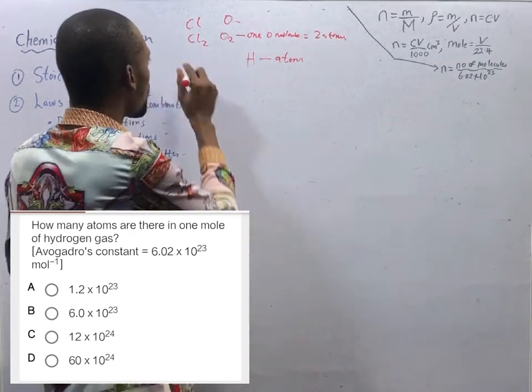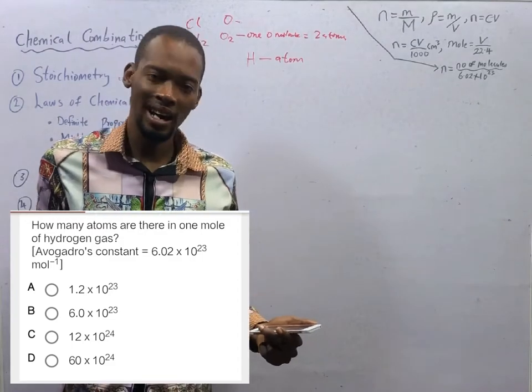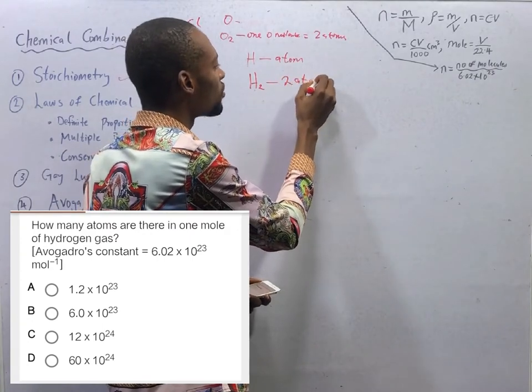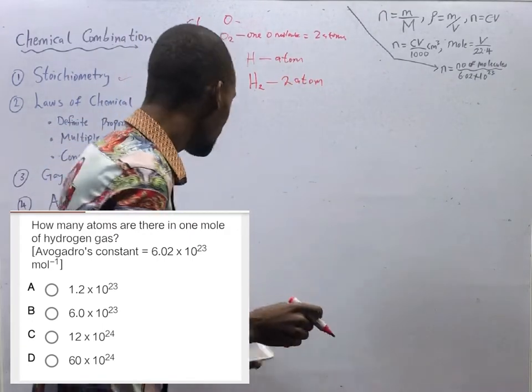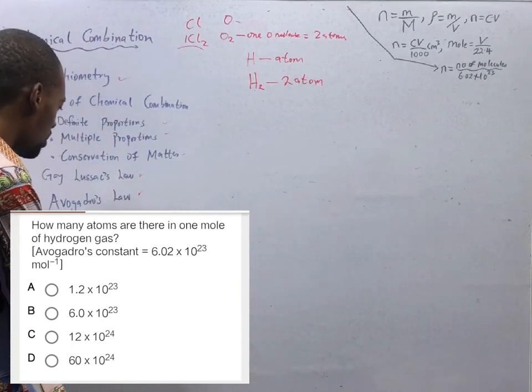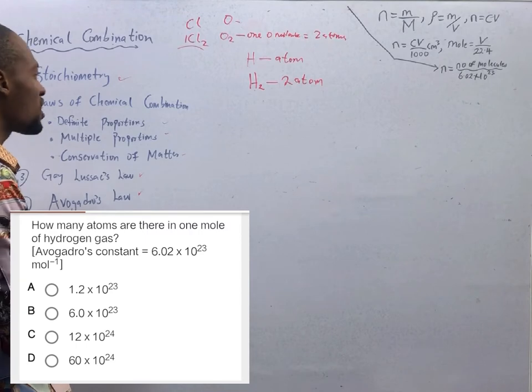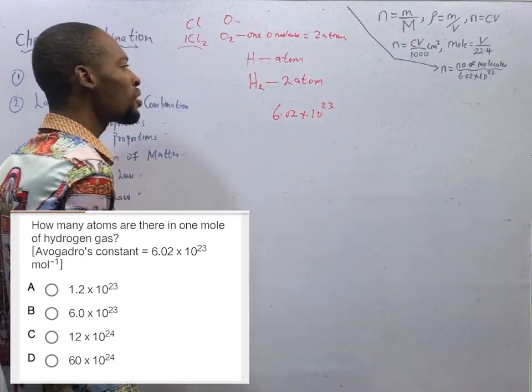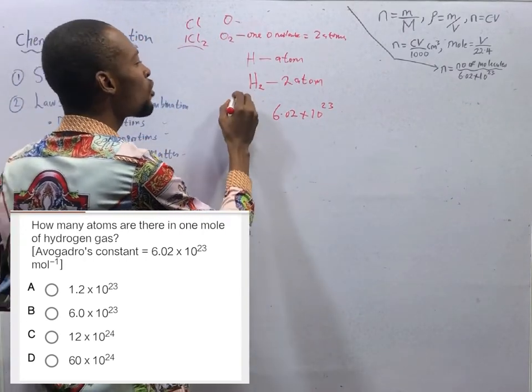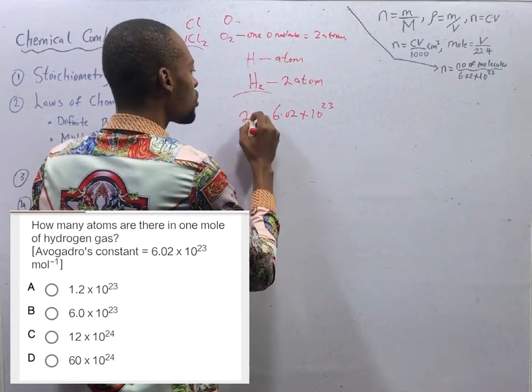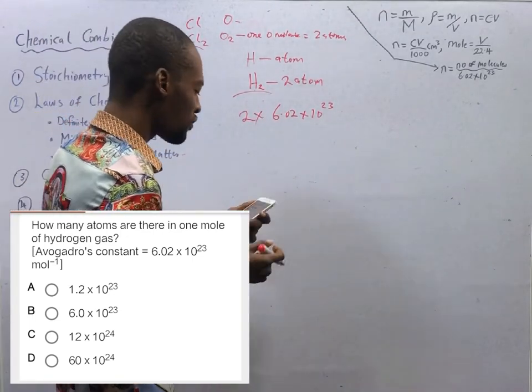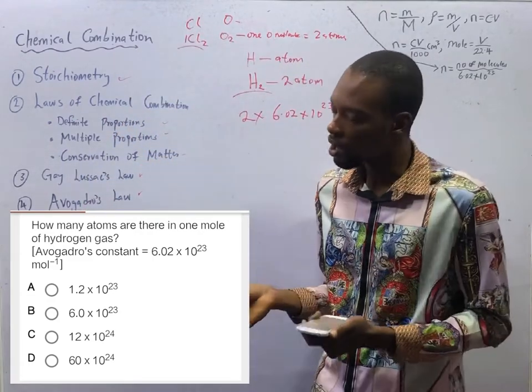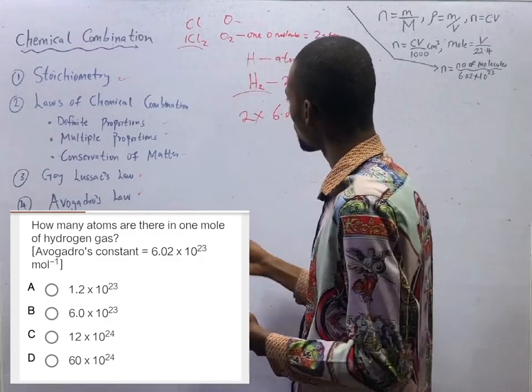Therefore, hydrogen gas or hydrogen molecule contains two atoms. And one atom contains Avogadro's number, which is 6.02 times 10 to the power of 23. Two atoms of hydrogen gas is simply equal to two atoms of hydrogen. This would be 2 times 6.02 times 10 to the power of 23, to give you 12.04 times 10 to the power of 24, or 1.2 times 10 to the power of 23.